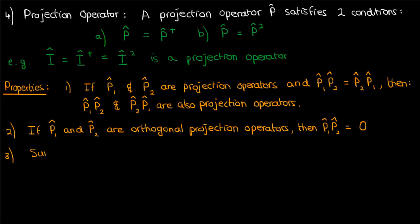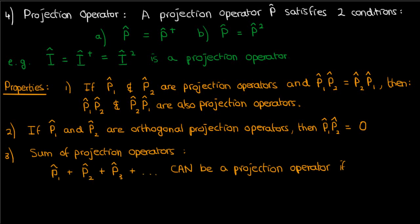The third property is that even though the sum of multiple projection operators typically isn't a projection operator, it still can be a projection operator as long as the projection operators within the sum are mutually orthogonal. What do I mean by this? I mean that P1 hat is orthogonal to P2 hat, P3 hat, and so on. Similarly, P2 hat is orthogonal to P3 hat, P4 hat, etc. You get the idea. That's what I mean by mutually orthogonal. They're all orthogonal to each other.